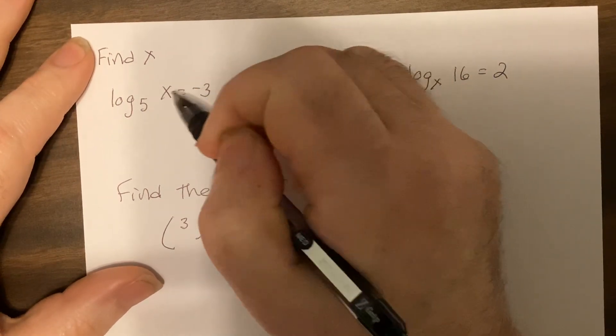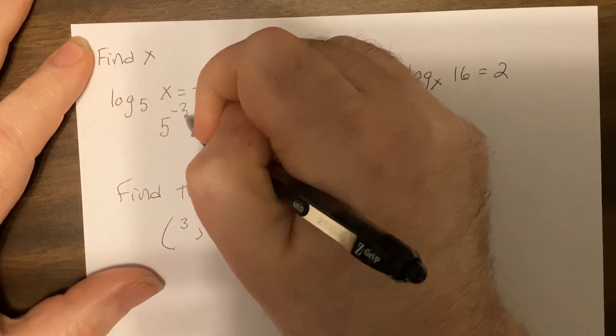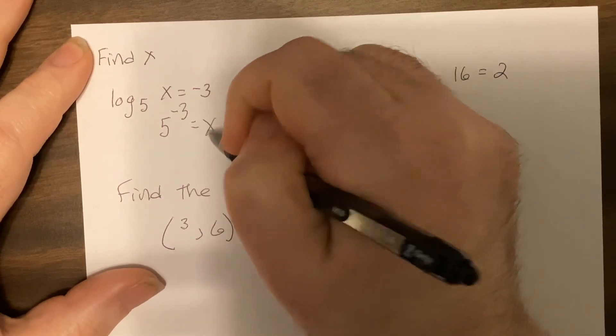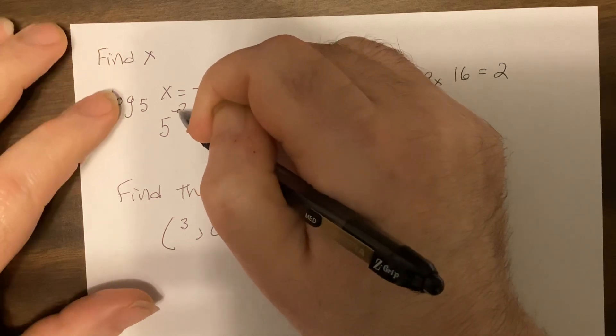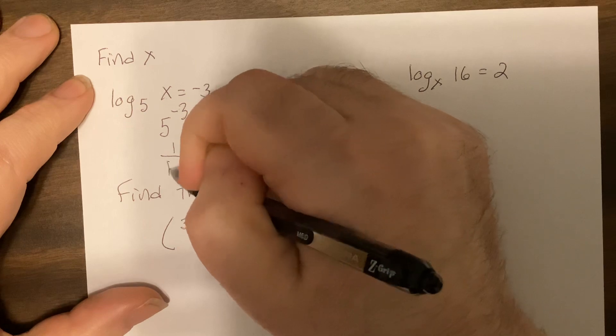to the power equals that, so it'd be five to the negative three equals x. Negative means take the reciprocal, three means cube it, so it'd be one over 125.